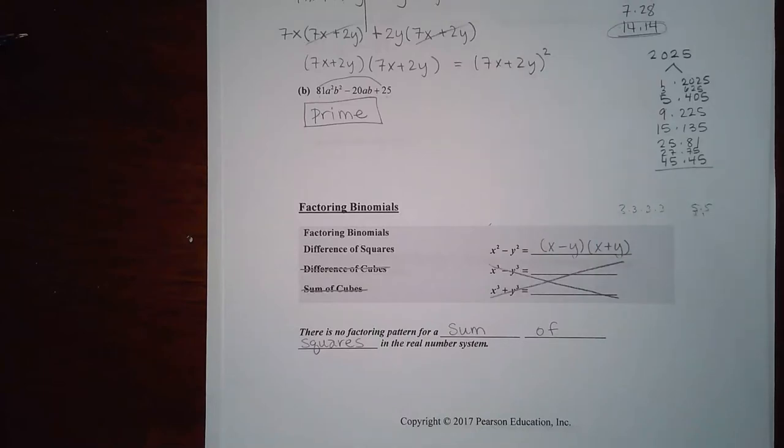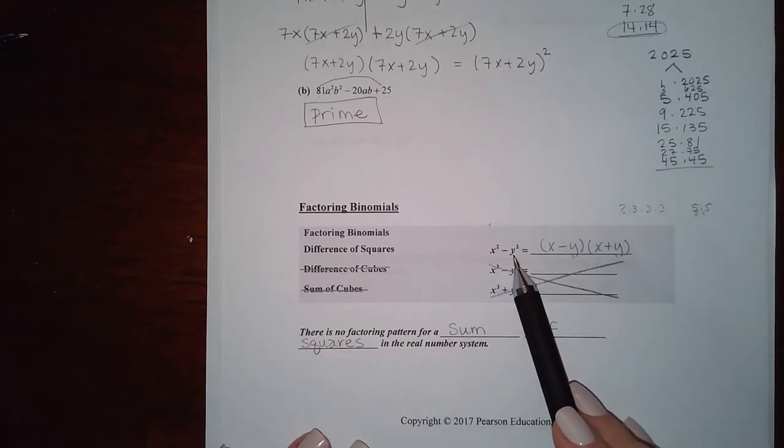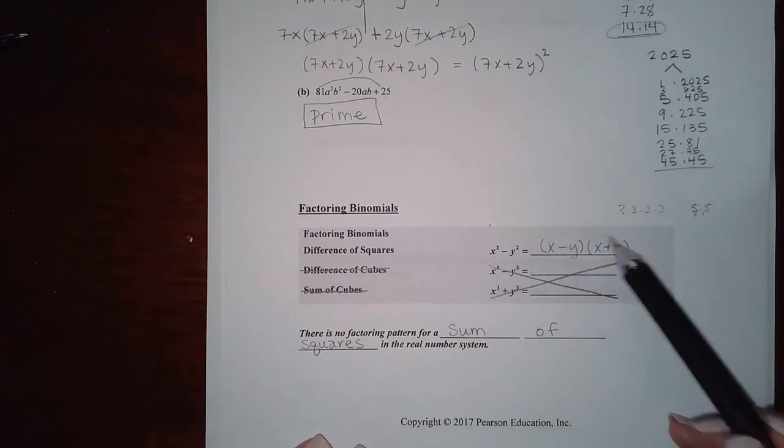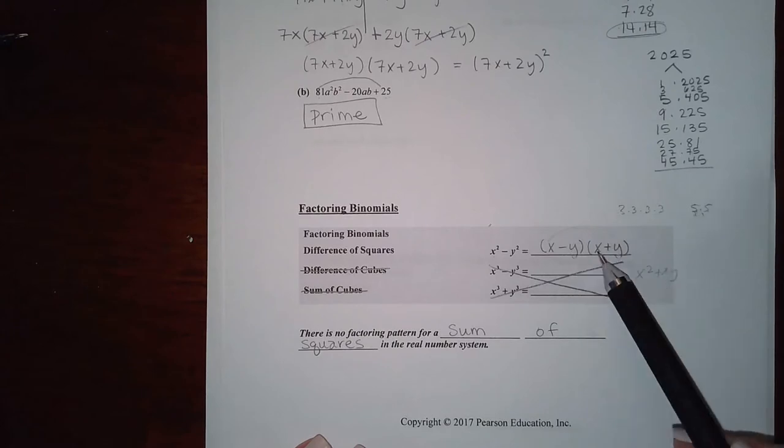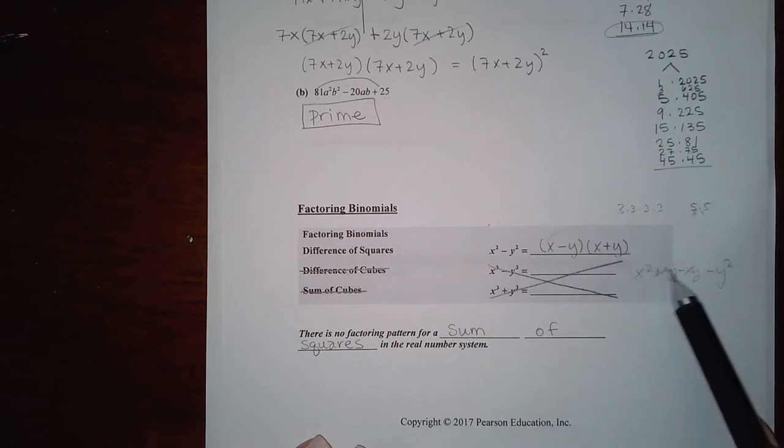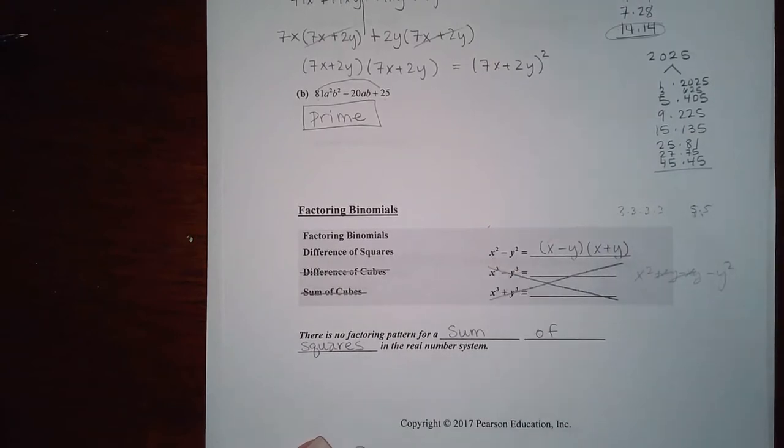Okay, so for factoring binomials we're going to be factoring what are called the perfect squares or difference of squares. So it's when you have a perfect square minus another perfect square, then you can factor it into x minus y and x plus y. What happens is this times this will give you x squared, that will give you positive xy, this will give you negative xy, and that will give you negative y squared. And these two terms will cancel each other out, which is why you only have x squared minus y squared.